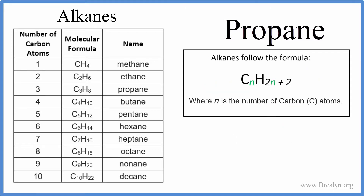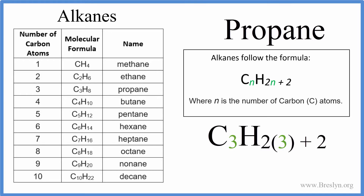If we wanted to write the formula, there's a rule we can use. For alkanes, we have CnH2n+2. So if you know that propane has three carbons, you could write the formula: C3H(2×3+2). That's C3 — six plus two gives us eight — C3H8. And that would be the formula for propane, and that applies to all of these alkanes.